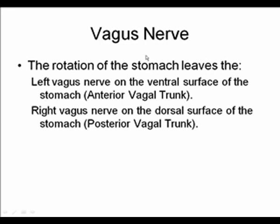Along with the rotation of the stomach, the two vagal trunks form from the left and right vagus nerves respectively. As the stomach rotates, the left vagus nerve comes to lie on the ventral surface and becomes the anterior vagal trunk, whereas the right vagus nerve comes to lie on the posterior part of the stomach and becomes the posterior vagal trunk.